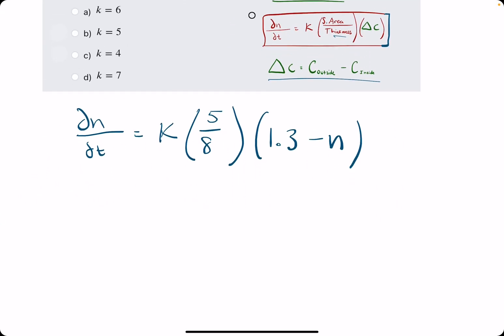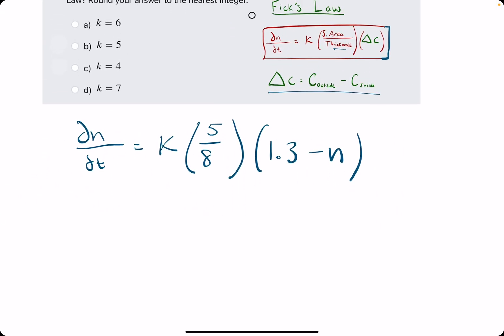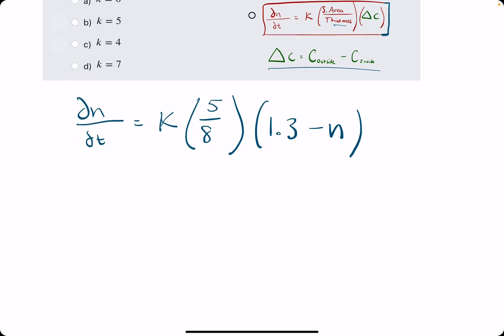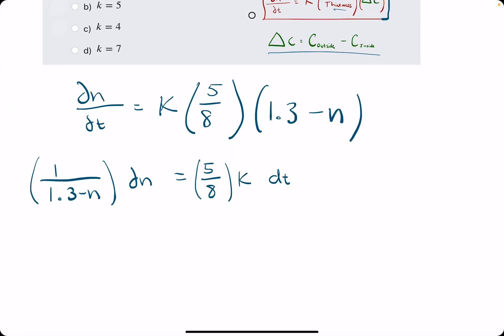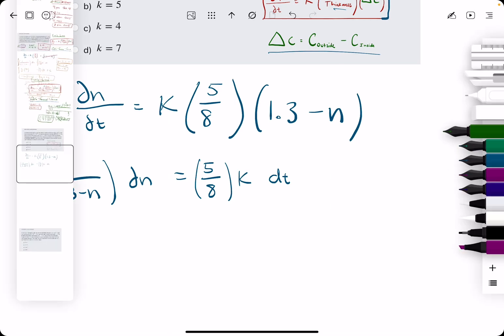And now we can separate our variables and integrate both sides to try to solve for n. It's almost like solving for an equation for y, like we've been doing in the previous problems. So, we start by dividing by 1.3 minus n, basically multiplying by 1 over 1.3 minus n. And we'll go ahead and multiply the dt to the right side and kind of rearrange the 5 eighths to go in front there.